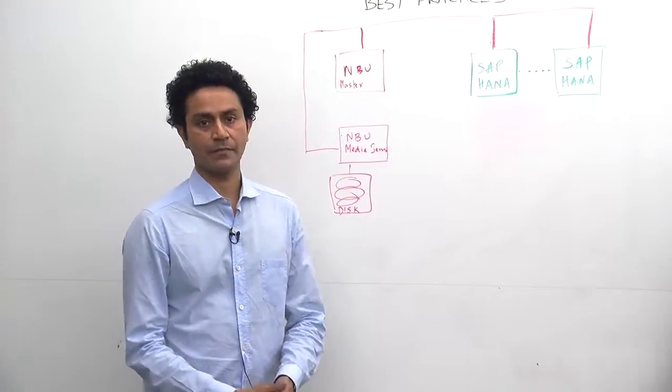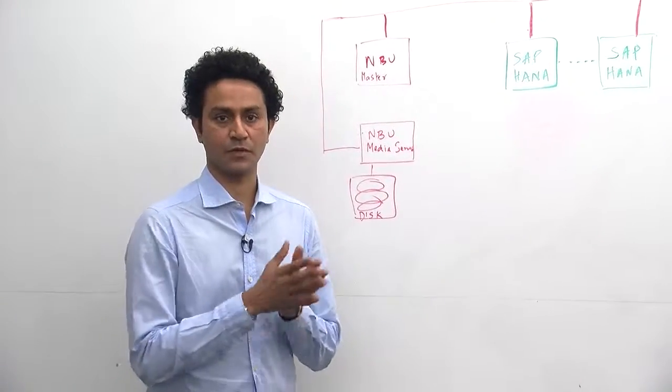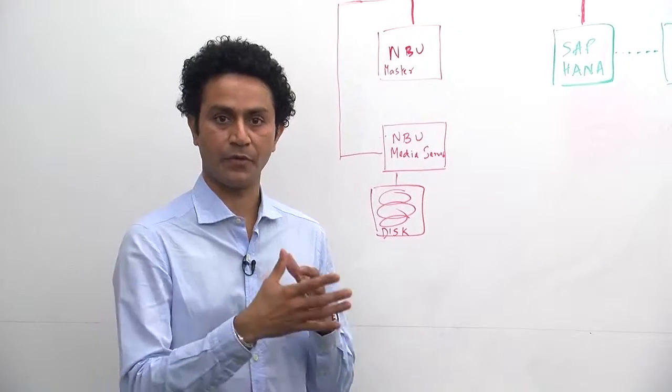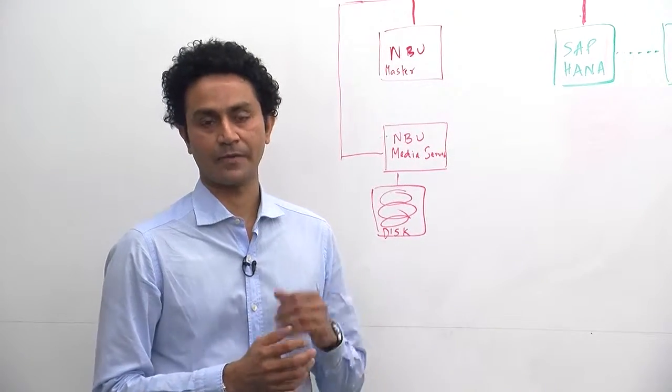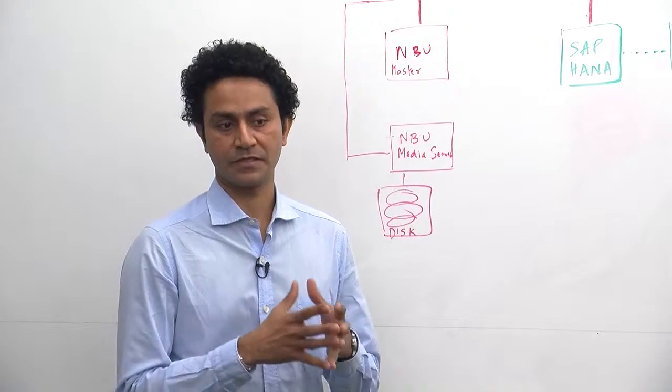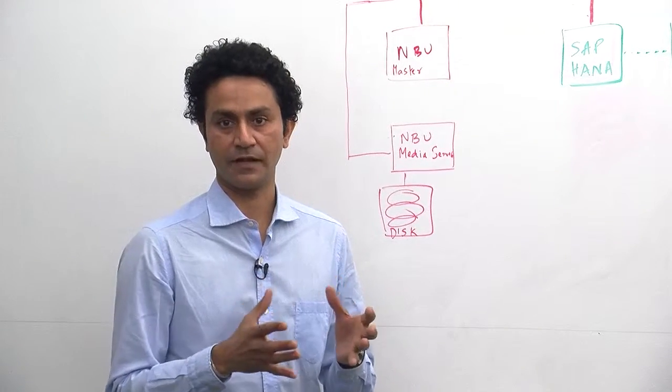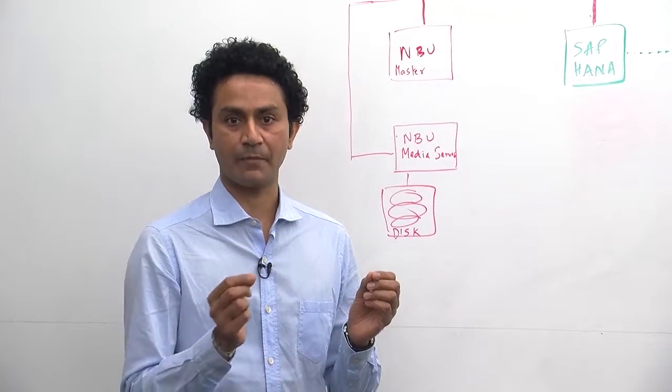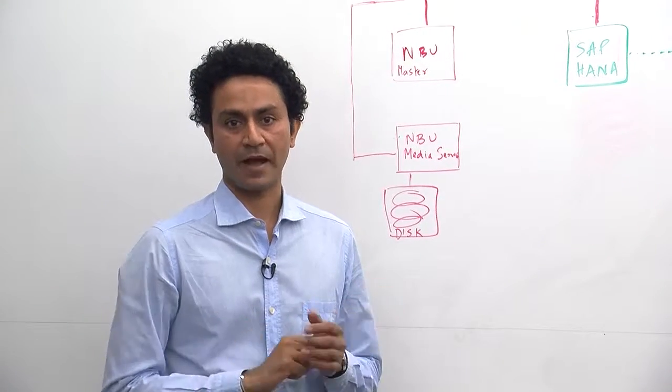Typically when you backup SAP HANA, we backup the database as well as the log backups. If you want to separate them and do point-in-time recovery by backing up the log separately, you can create what we call an SAP HANA configuration file called .util file.